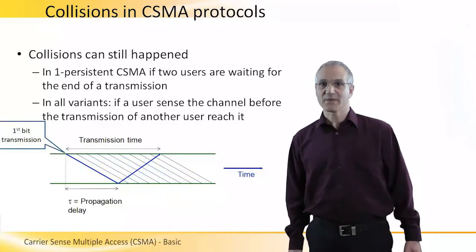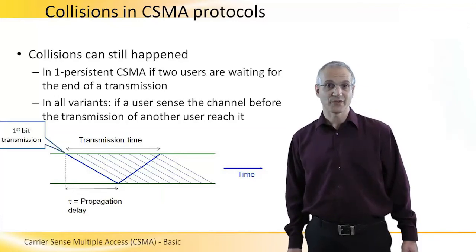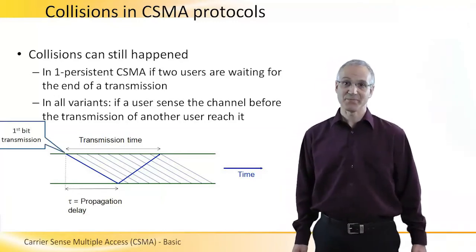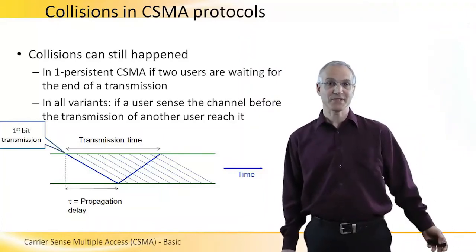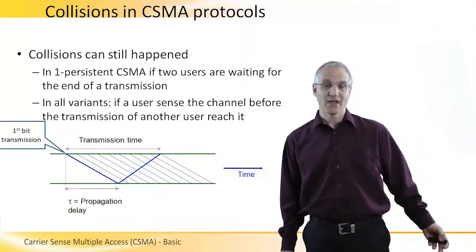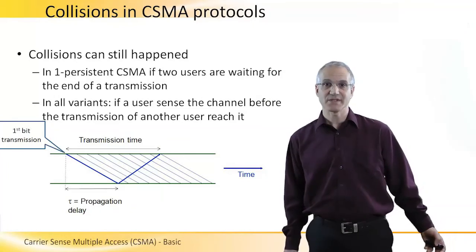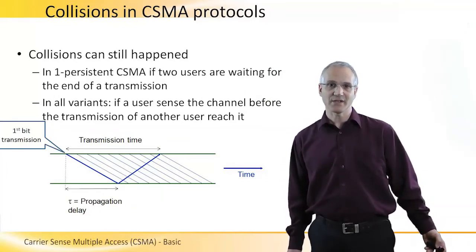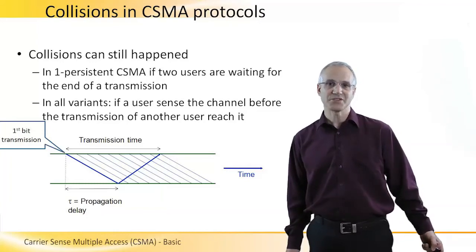While CSMA protocols drastically decrease the number of collisions, collisions can still occur. In 1-persistent and P-persistent with probability P, if two users are waiting for the end of a transmission, they will collide. But in all variants of CSMA, a collision can still occur because when a user senses the channel to be idle, it doesn't really mean that the channel is idle.